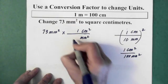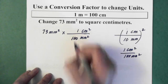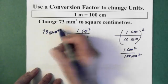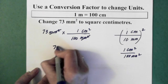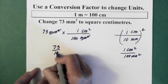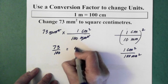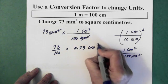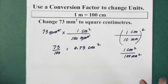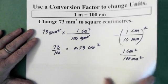So, 1 goes here. The 100 goes here. Millimeter squared cancels millimeters squared. And I end up with 73 divided by 100, which equals 0.73. And we have centimeters squared. And there you go. It's actually pretty easy.